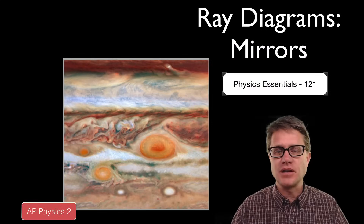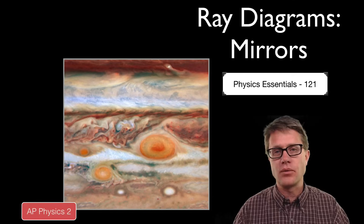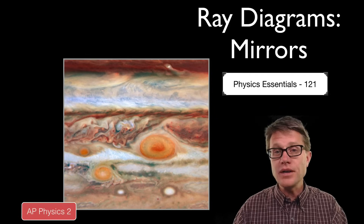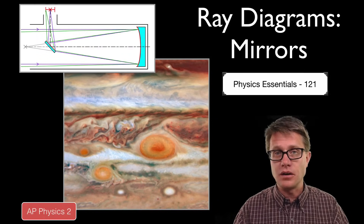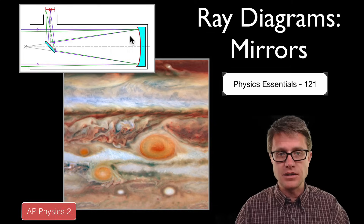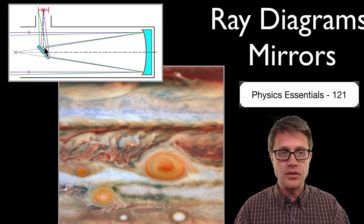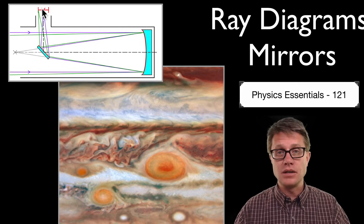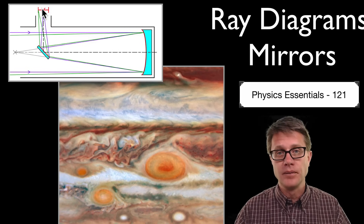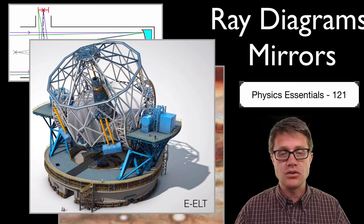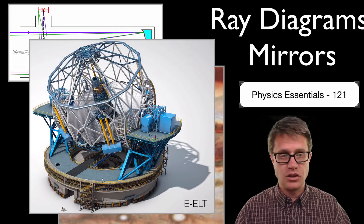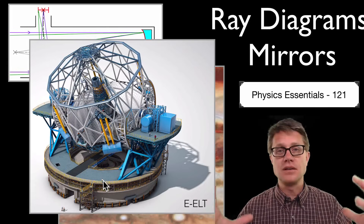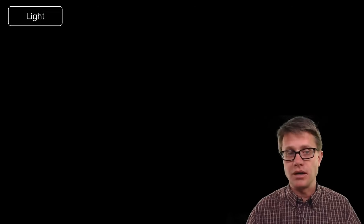Hi. It is Mr. Andersen and this is AP Physics Essentials video 121. It is on ray diagrams drawn from mirrors. This is a beautiful picture of Jupiter, and it is only there because we have made telescopes made of mirrors that can take all the light. This is a concave mirror, focusing it off a plane mirror and then eventually to the observer. The bigger that mirror is, the more detail we can have. The Europeans are starting construction on what is called the Extraordinarily Large Telescope — here is a human for scale — and it has a massive mirror so we can gather more light and have a better image.